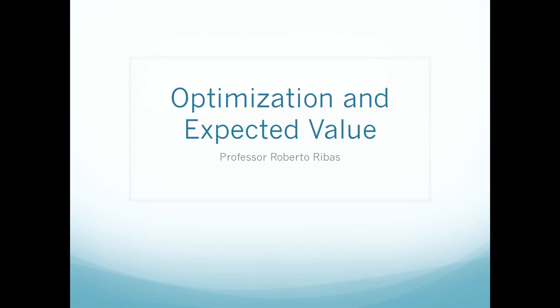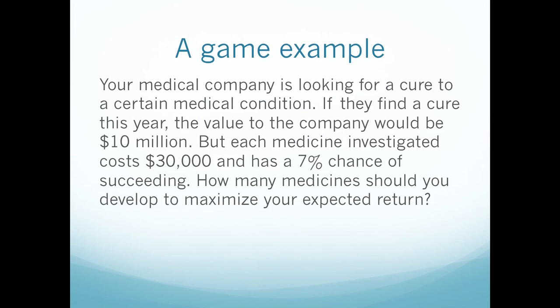Now let's look at a problem involving optimization and expected value. We're going to start with a simple game example. Your medical company is looking for a cure to a certain medical condition. If they find a cure this year, the value of the company would be $10 million. But each medicine investigated will cost them $30,000 and only has a 7% chance of succeeding. How many medicines should you develop to maximize your expected return?